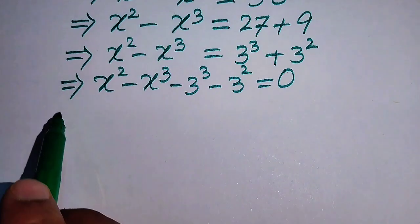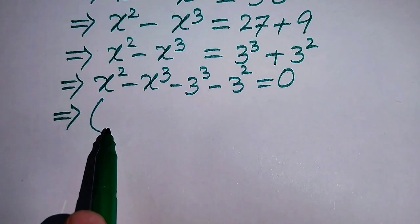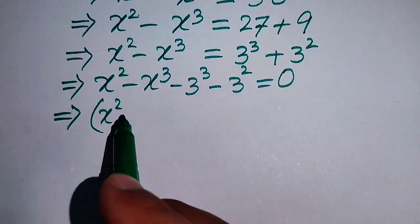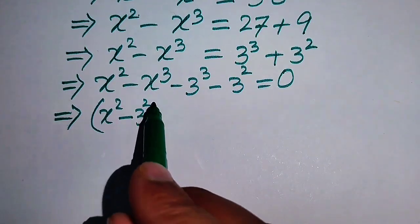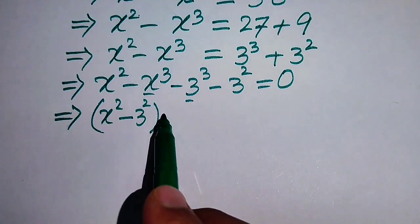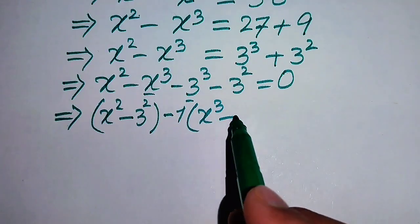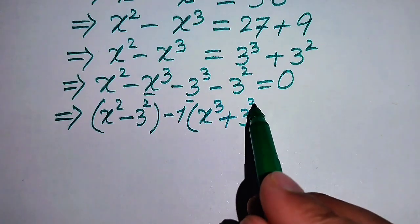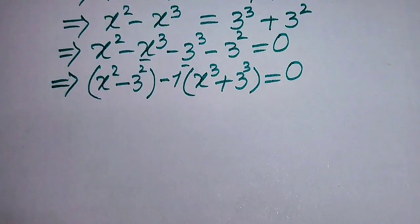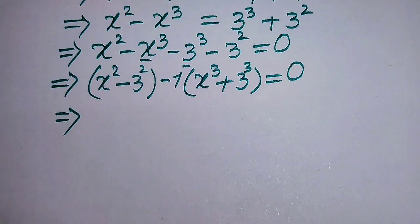In the next step, we make pairs: square terms with square terms, and cubic terms with cubic terms. The square terms are x squared minus 3 squared. For the cubic terms, we take out a factor of minus 1, giving minus 1 times (x cubed plus 3 cubed). The whole equation equals 0.